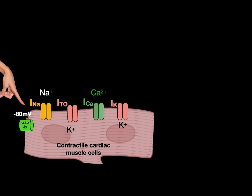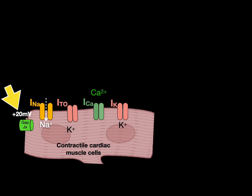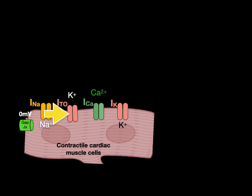Let's put all this together. Negative 80 millivolts represents the resting membrane potential of a contractile cardiac muscle cell. It stays at negative 80 millivolts until an approaching action potential through gap junctions influences the resting membrane potential until it reaches threshold at negative 60 millivolts. At that point, voltage-gated sodium channels open, allowing a rapid sodium influx which depolarizes the membrane to positive 20 millivolts, causing the voltage-gated sodium channels to become inactive. Then the transient outward channels open, allowing an efflux of potassium that initially starts to repolarize the membrane, and around zero millivolts this channel closes.